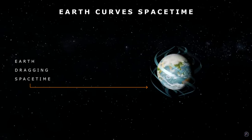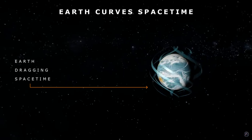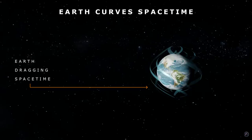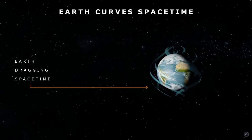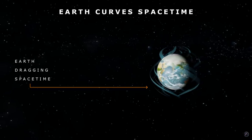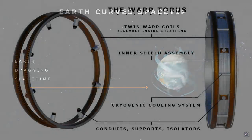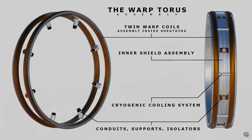Understanding how the Earth curves spacetime is the key to understanding what gravity is. Let me say that again: understanding how mass — the Earth — curves spacetime is the key to knowing what gravity is. Now let's talk more about the specifics of the torus assembly.